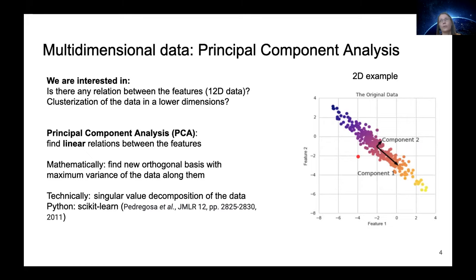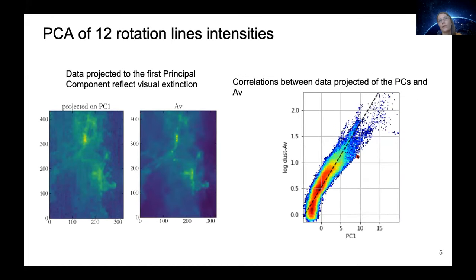And we obtain the tight correlation between the first principal component and the dust extinction. As you can see on the left plot, our data projected on the first principal component clearly reflects the visual extinction map.